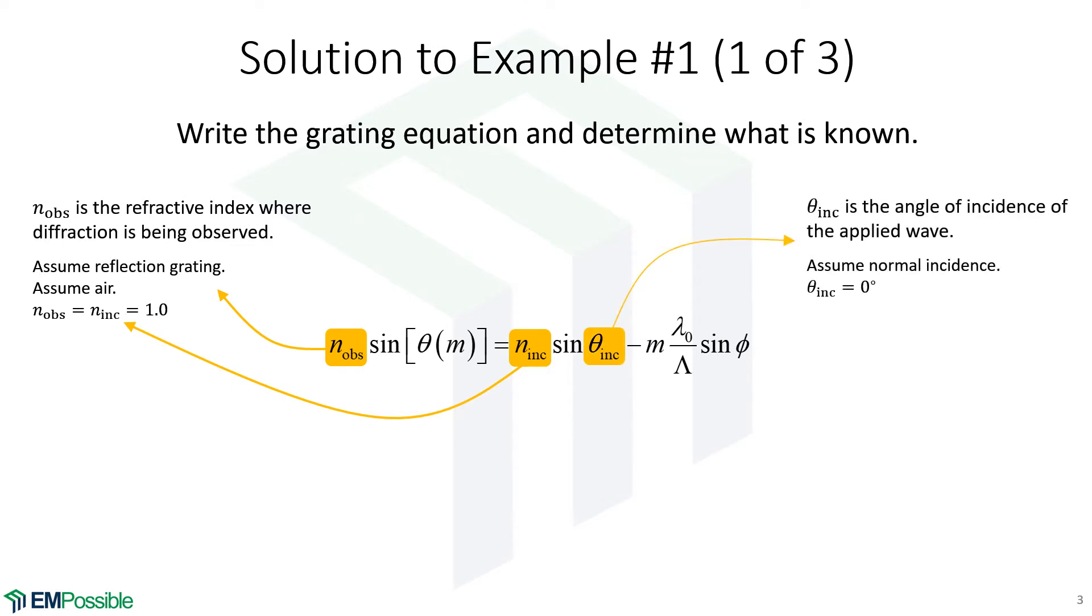Angle of incidence, that was also not given. And when that's not given, assume normal or maybe try to clarify it. But here, I'm going to assume normal incidence. So theta inc is 0 degrees, 0 degrees off of the normal.